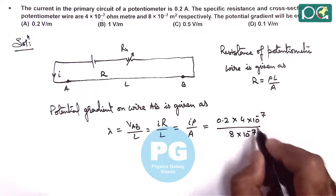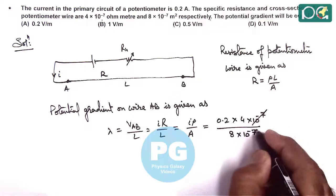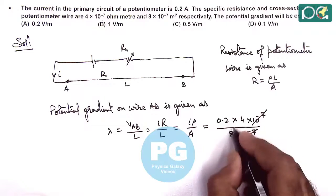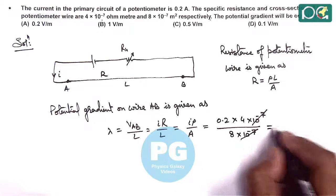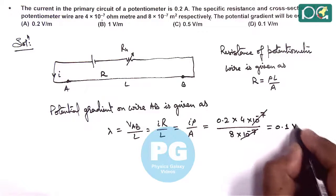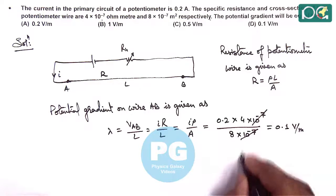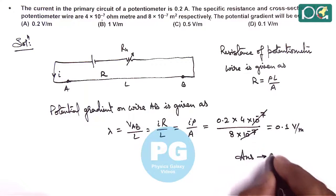And on simplifying here, 10 to power minus 7 gets cancelled out, and this 0.2 times 4 by 8 coming out is 0.1 volt per meter. So the answer to this question is matching with option D.